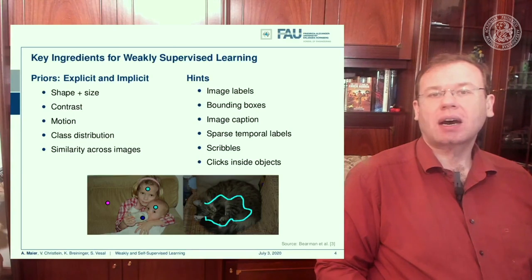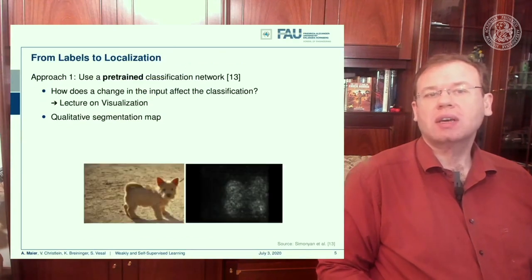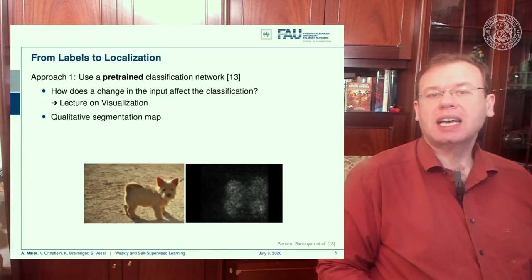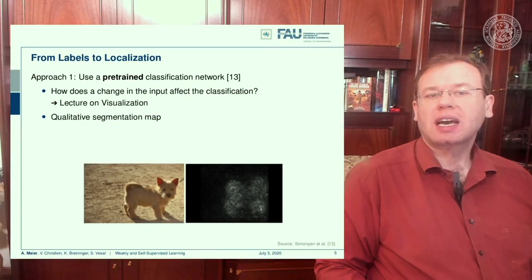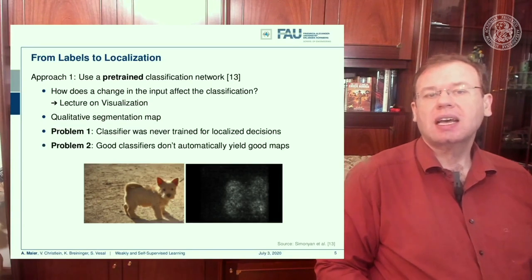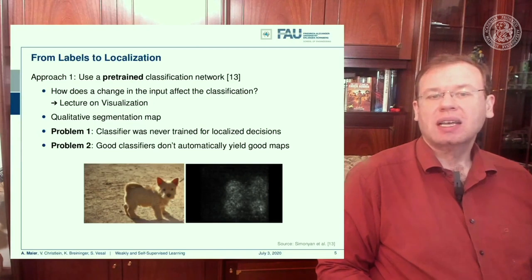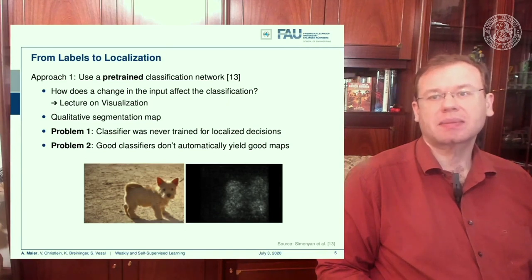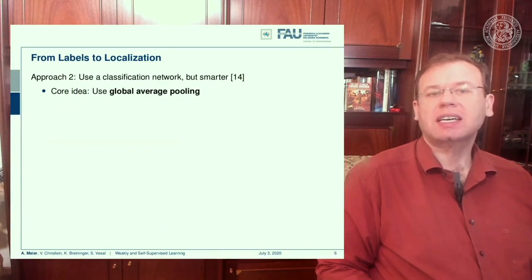One general approach — from labels to localization — is to use a pre-trained classification network and apply tricks like those from the visualization lecture: backpropagating the class label into the image domain to produce a qualitative segmentation map. However, the problem is that this classifier was never trained for localized decisions, and the second problem is that good classifiers don't automatically yield good maps.